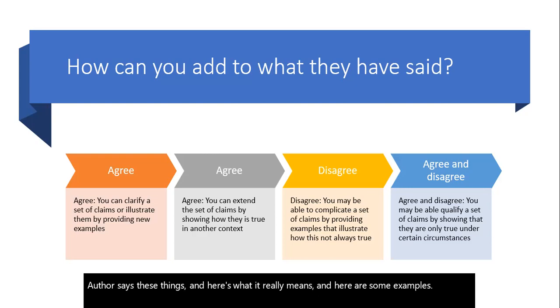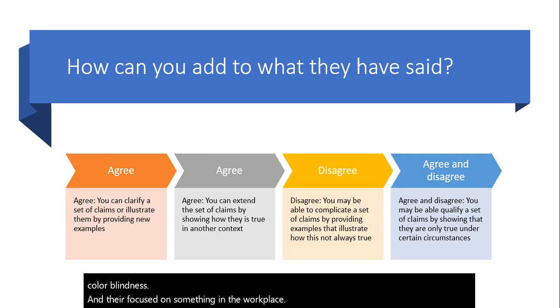Another way you can agree is to extend a set of claims. For example, you find a set of claims on colorblindness and they're focused on something in the workplace, and you extend it and say this is also true in education. You're still agreeing with the author, but you're extending it.